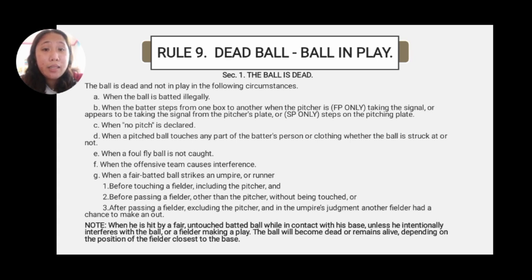A. When the ball is batted illegally. B. When the batter steps from one box to another when the pitcher is taking the signal or appears to be taking the signal from the pitcher's plate, or steps on the pitching plate. C. When no pitch is declared. D. When a pitched ball touches any part of the batter's person or clothing, whether the ball is struck or not, the ball is dead. E. When a foul fly ball is not caught. F. When the offensive team causes interference. G. When a fair batted ball strikes an umpire or a runner.